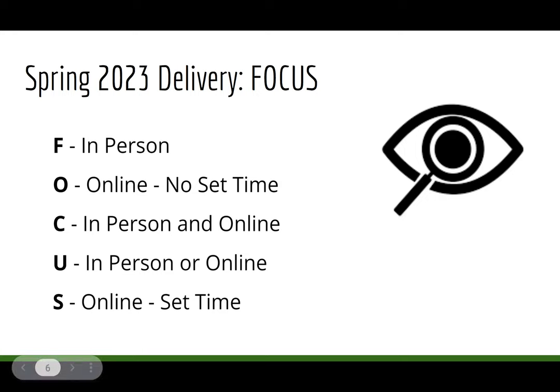They have given us an acronym which makes it easy to remember. Face-to-face in-person courses — that's a more traditional course. Online with no set time is O, which is what we might call asynchronous, where there are no meetings. C and U are the more flexible ones: C being in-person and online, a combination of in-person and online meetings; U being in-person or online, meaning the student can choose how they want to attend. And S is online at a set time — a Zoom class with synchronous weekly meetings.